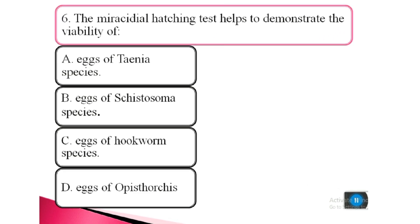Question 6. The miracidial hatching test helps to demonstrate the viability of: a. eggs of Nile species, b. eggs of Schistosoma species, c. eggs of hookworm species, d. eggs of Ascaris species.